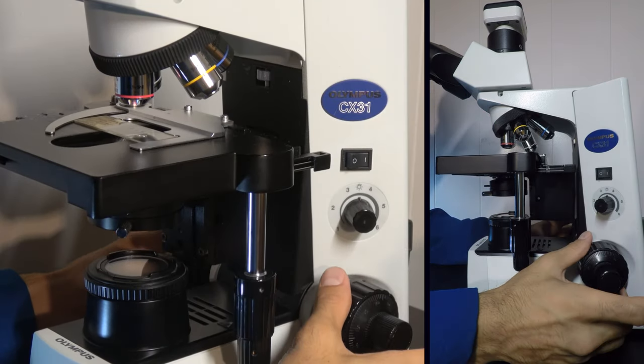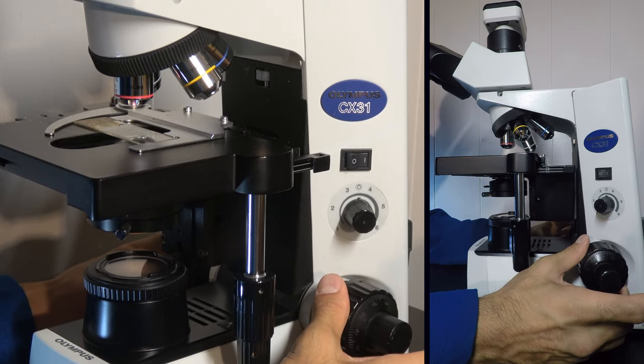While looking through the scope, slowly bring the stage down using the coarse focus. You'll notice it doesn't take much to bring the slide sample into focus.